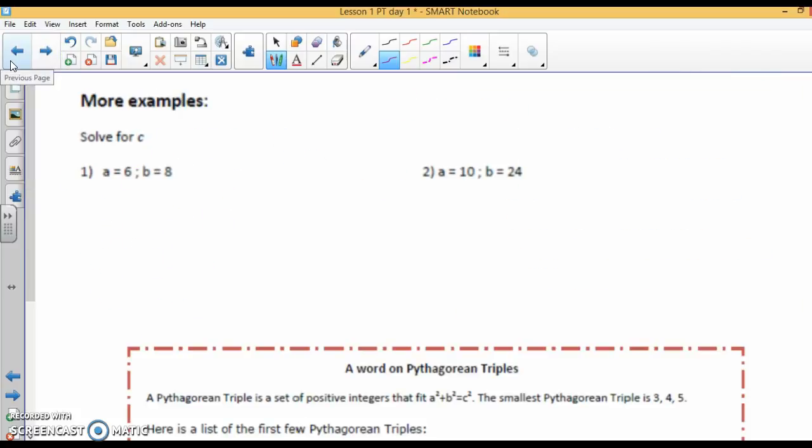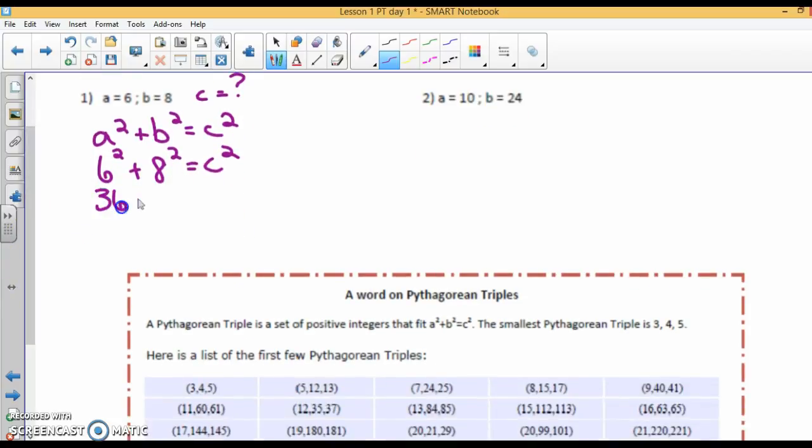All right. Here we go. Find C. So they gave us A and B. We're looking for C. Again, write down the formula. A squared plus B squared equals C squared. Substitute. A is 6. So 6 squared plus B is 8. We're looking for C. 6 squared is 36 plus 64 equals C squared. 36 plus 64 is 100 equals C squared. Take the square root of both sides. C is 10.